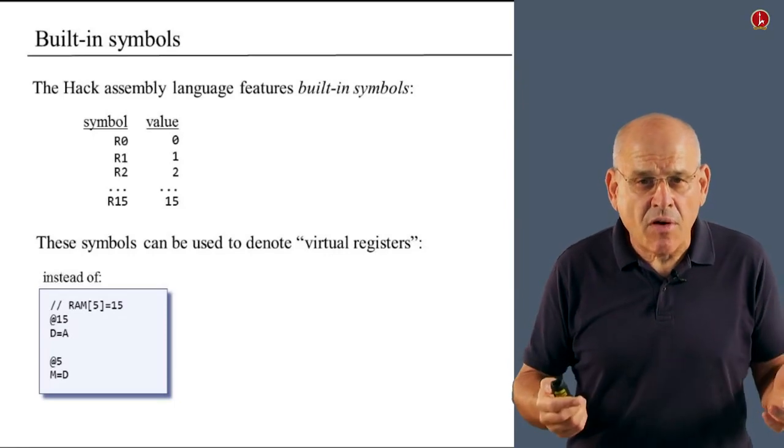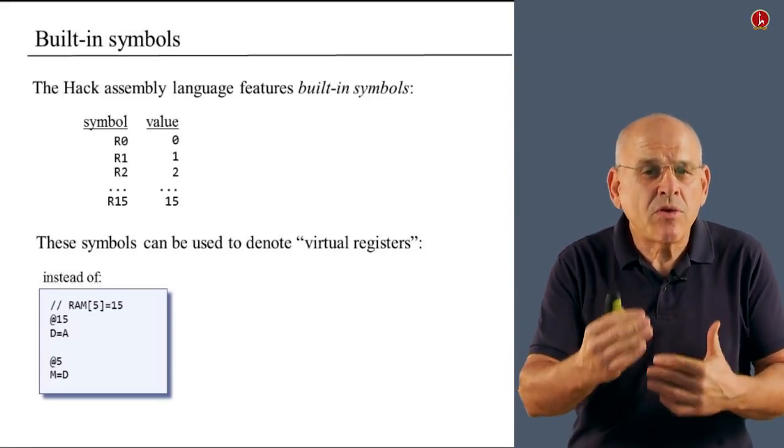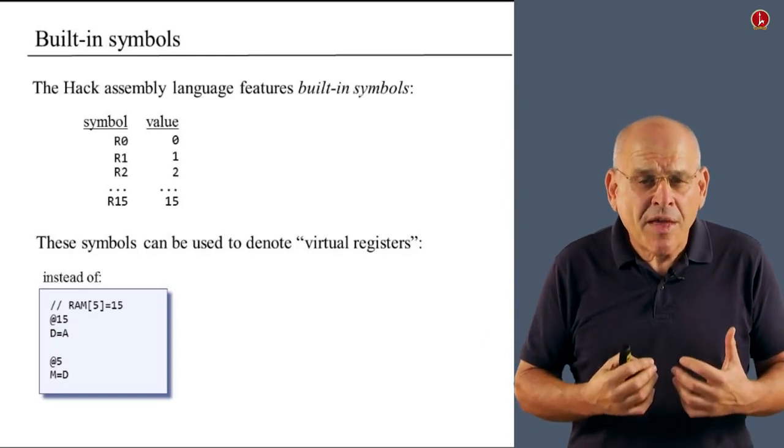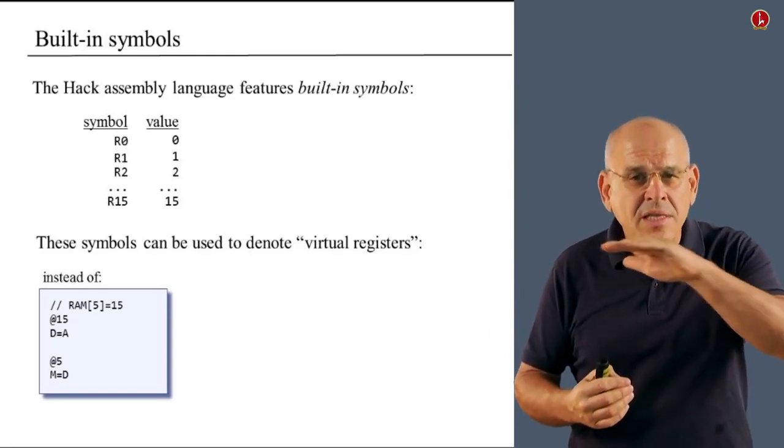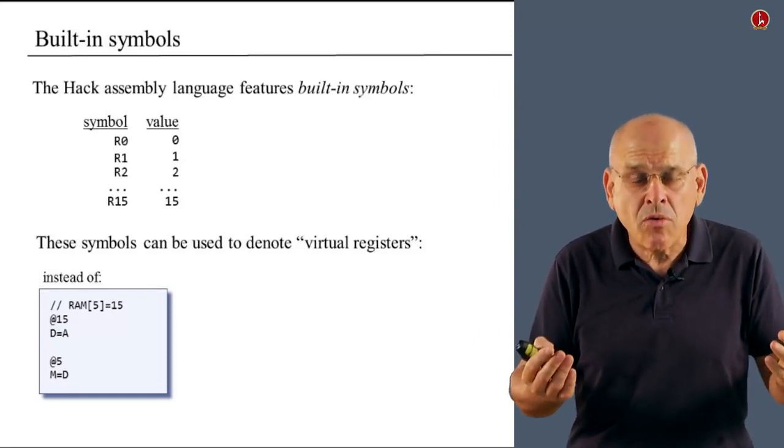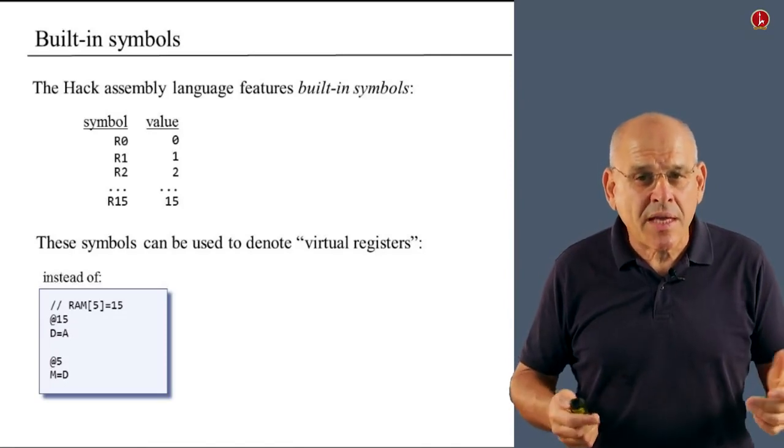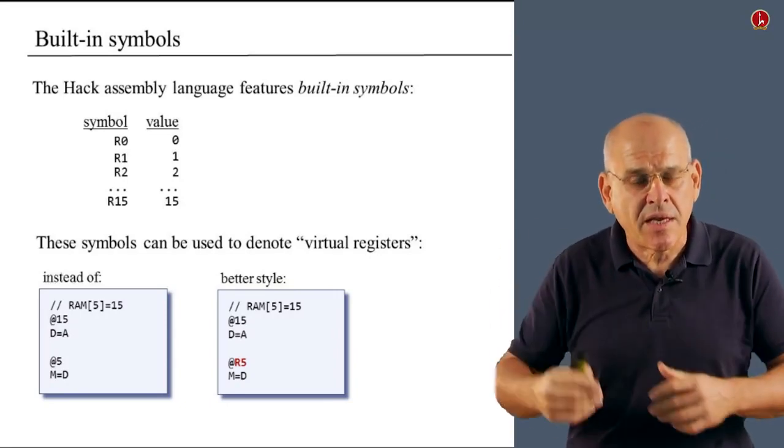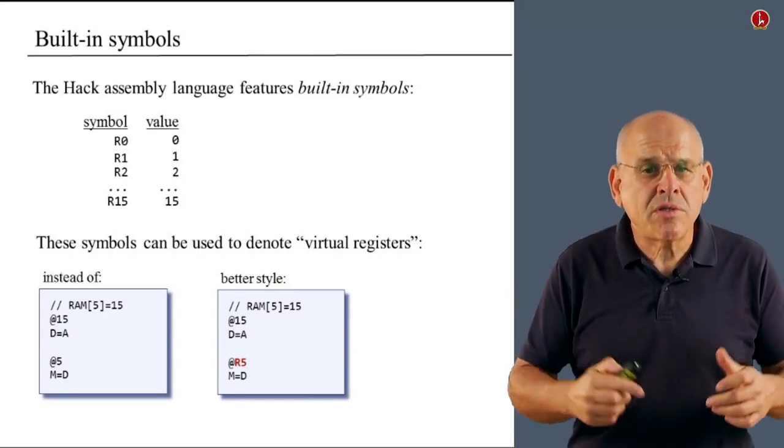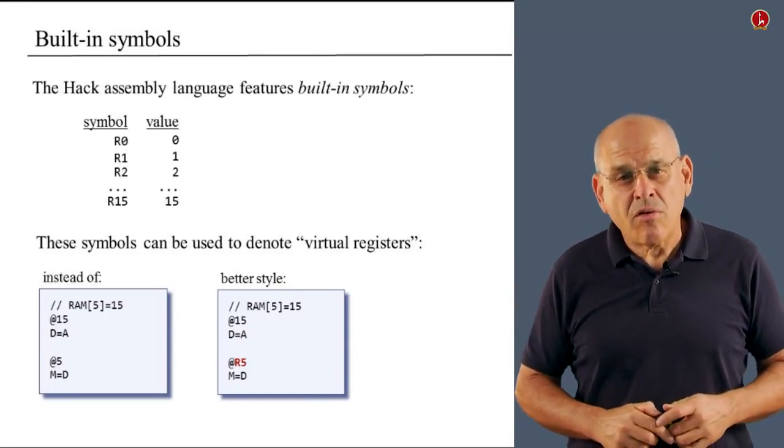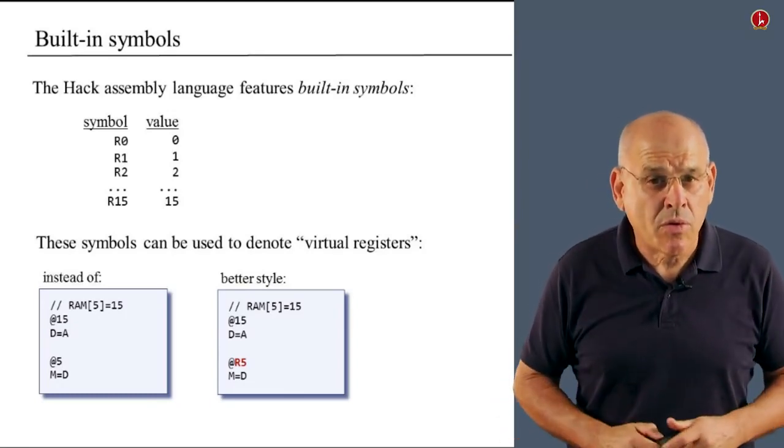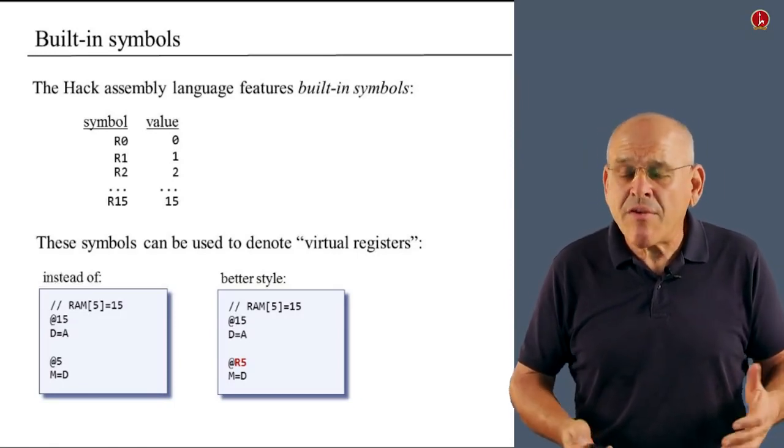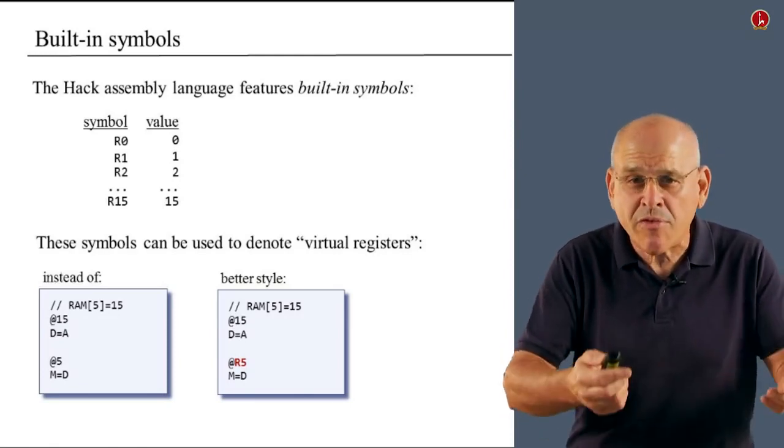So, there's something troubling about this code. First of all, we do two very different things, but we use exactly the same syntax, at number. That's one thing which is a little bit disconcerting. And the other thing which is somewhat troubling is that when you read a single A instruction, you have no idea what the programmer wanted to do until you see the next instruction. So, how can we make this thing more readable? Well, our advice is that whenever you want to address one of the first 16 registers in the memory, use the label convention. And then anyone who reads your program will know exactly what you want to do, including yourself.